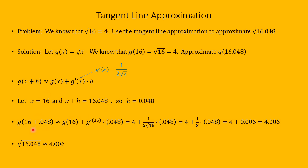According to the tangent line approximation, g of 16 plus 0.048 is approximately g of 16 plus g prime of 16 multiplied by 0.048. That's 4 plus 1 over 2 square root of 16, times 0.048. The square root of 16 is 4, so the denominator is 2 times 4 which is 8. This becomes 4 plus one-eighth times 0.048. One-eighth times 0.048 equals 0.006, so 4 plus 0.006 gives us 4.006.